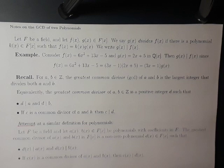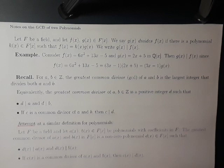For example, consider f of x equals 6x squared plus 13x minus 5, and g of x equals 2x plus 5, both considered as polynomials with coefficients in the rationals. Then g of x divides f of x, since f of x can be factored as 3x minus 1 times g of x.